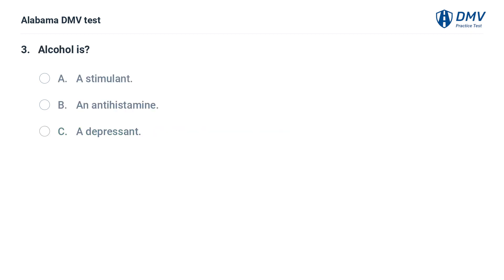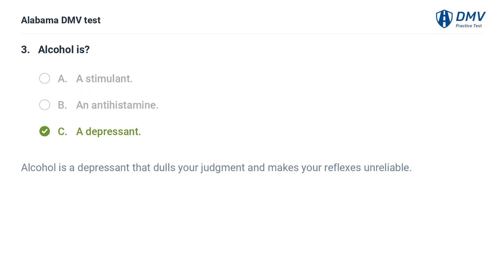Alcohol is: A. A stimulant. B. An antihistamine. C. (implied: a depressant). Correct answer: Alcohol is a depressant that dulls your judgment and makes your reflexes unreliable.